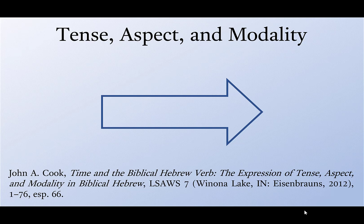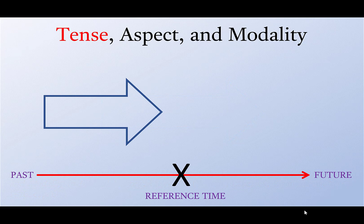Tense, aspect, and modality refer to different things. Tense locates an action in time. I've placed the arrow on the left side of the screen, and on the bottom with that red line, I'm expressing a left to right movement of time from some past to some future. Those ideas are defined in relationship to a certain reference time, which may not necessarily be the present of the speaker or writer. Someone can speak of time in the past and what was once future but is now past — these intricate time expressions are a matter of tense.